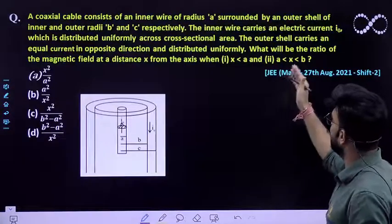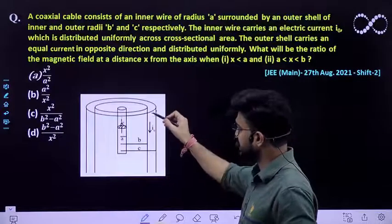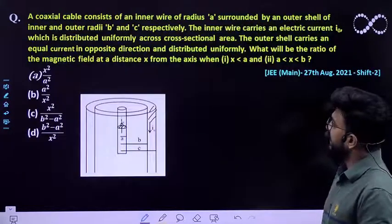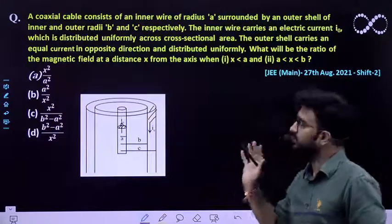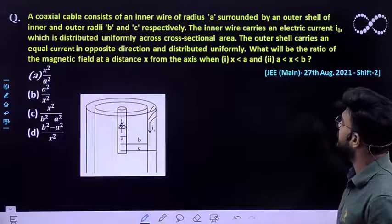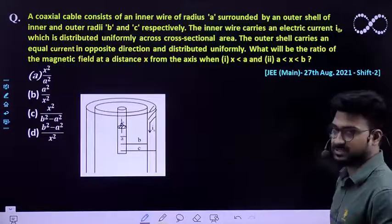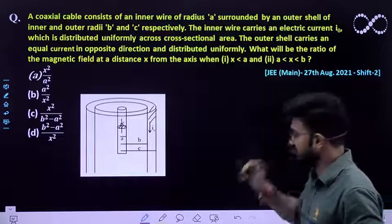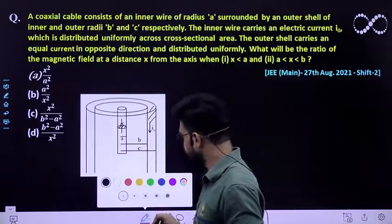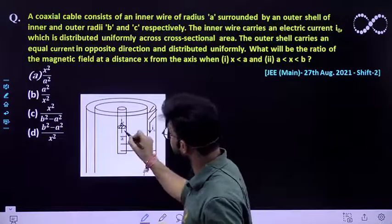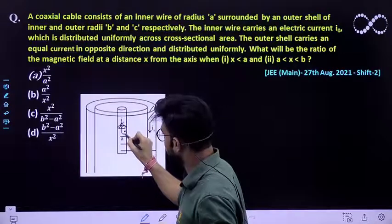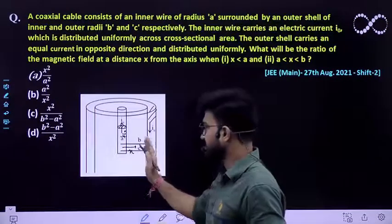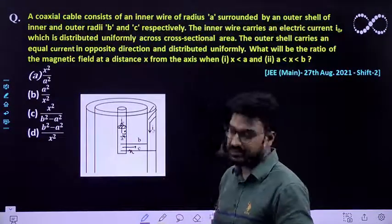Now the outer shell carries an equal current in the opposite direction. So this shell also carries current in the opposite direction which is I0 and distributed uniformly over its shell. What will be the ratio of magnetic field at x from the axis when x is less than A and when x is between A and B? So that means you need to find out the value of magnetic field at a distance of x when x is less than A and when x is again greater than A and less than B.